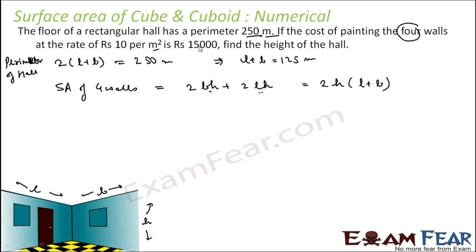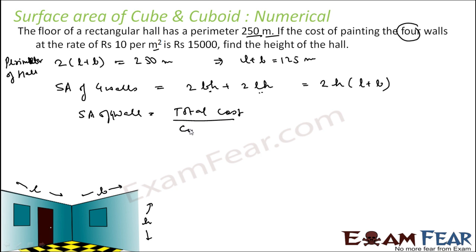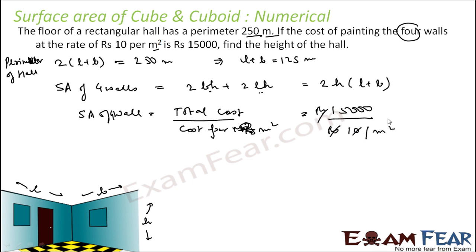Now looking at what's given — the cost of painting all four walls at ₹10 per square meter is ₹15,000. So the surface area of the 4 walls equals total cost divided by cost per meter square, which is 15,000 ÷ 10 = 1,500 meter square.